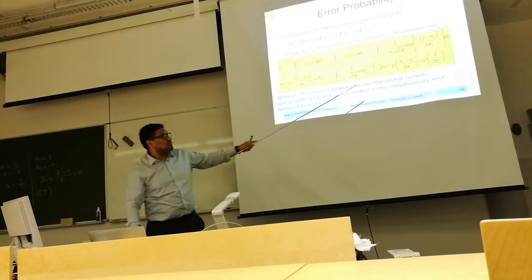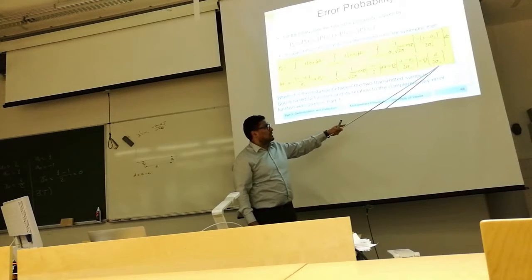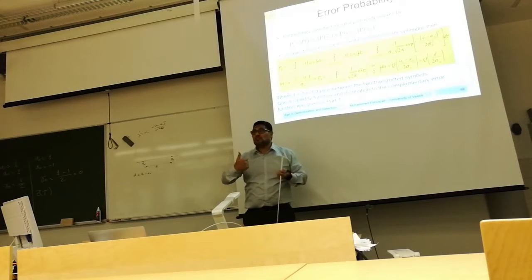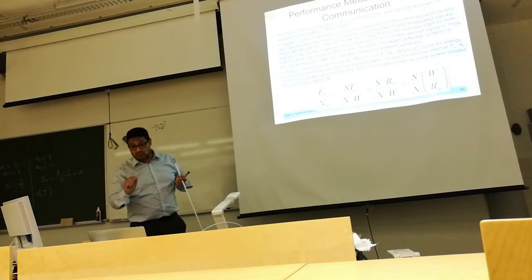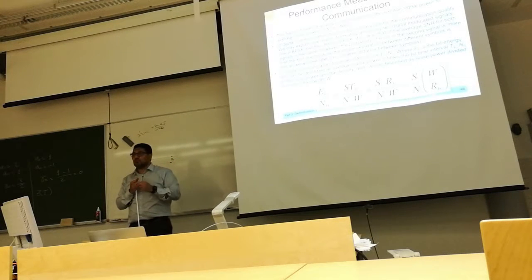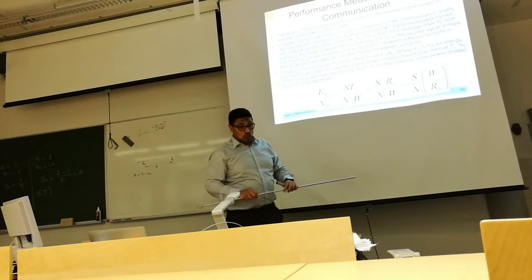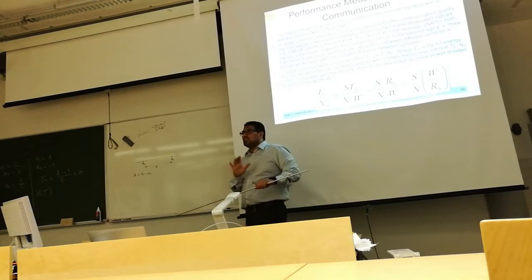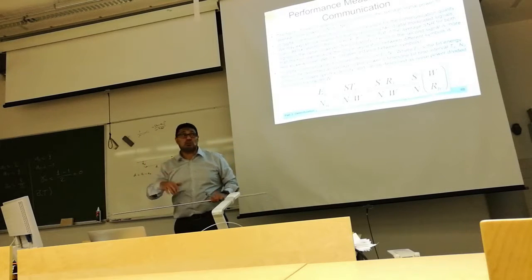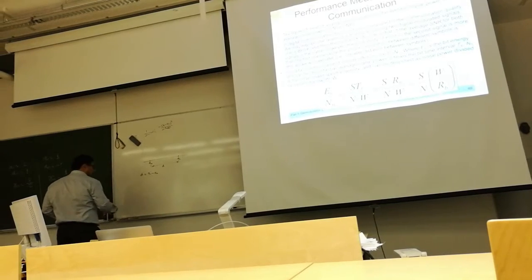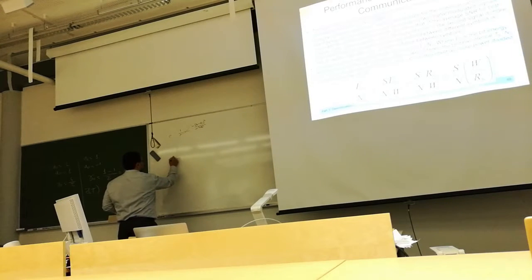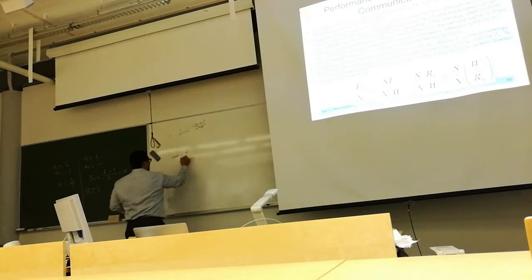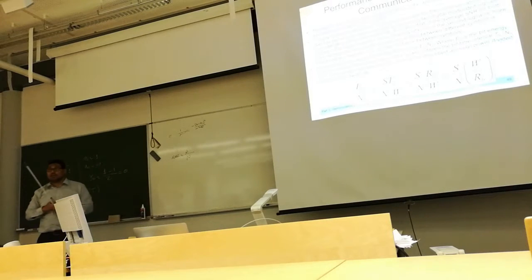The probability of error depends on the distance between transmitted symbols and the standard deviation of the noise. The distance is related to the signal power, as we will see later. Now let us define some performance measure for digital communication. In communication, we typically use the signal-to-noise ratio (SNR): SNR = average received signal power / average noise power.